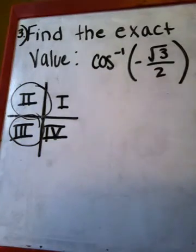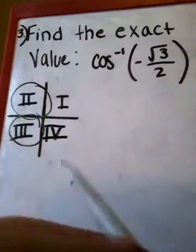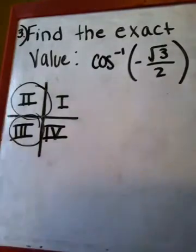Find the exact value of the inverse cosine of negative square root 3 divided by 2. Looking at our unit circle, we can see that the only time the cosine is negative square root 3 over 2 is when we are in quadrants 2 and 3.